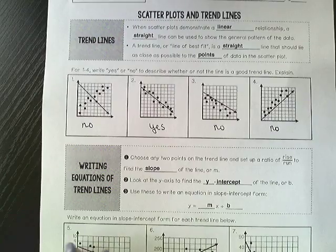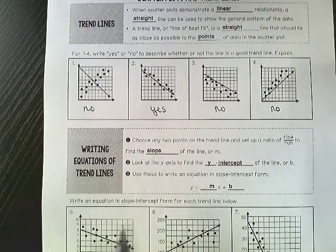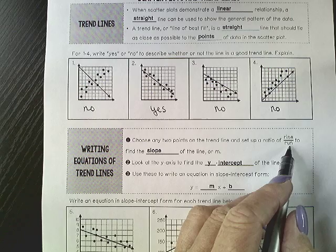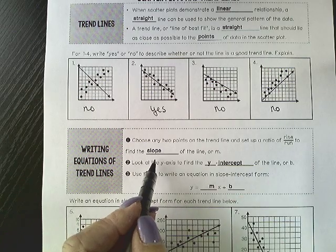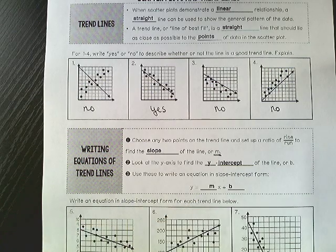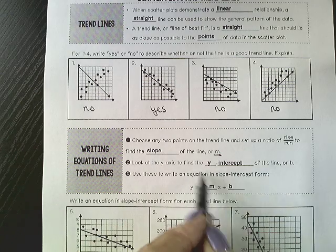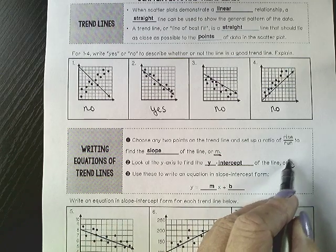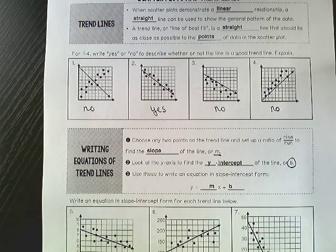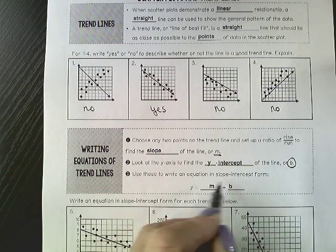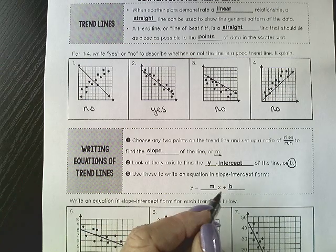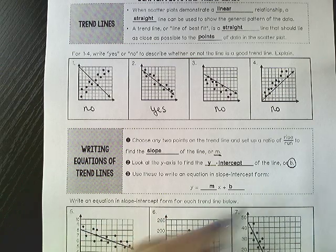So now you are going to remember that you can choose any two points and set them up as a ratio of rise over run to find the slope, which is m. We also can look at the y-axis to find our y-intercept, which is b. And then you are going to put it into slope-intercept form, y equals mx plus b.